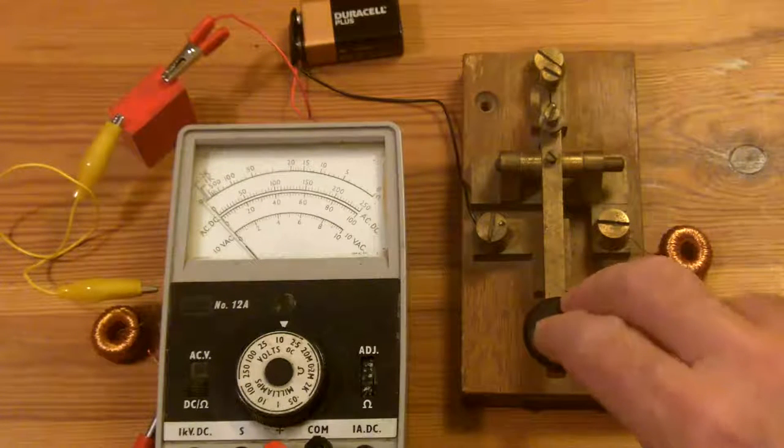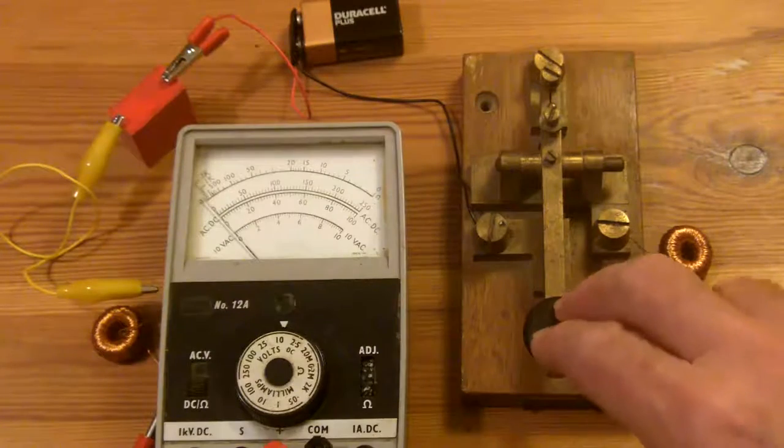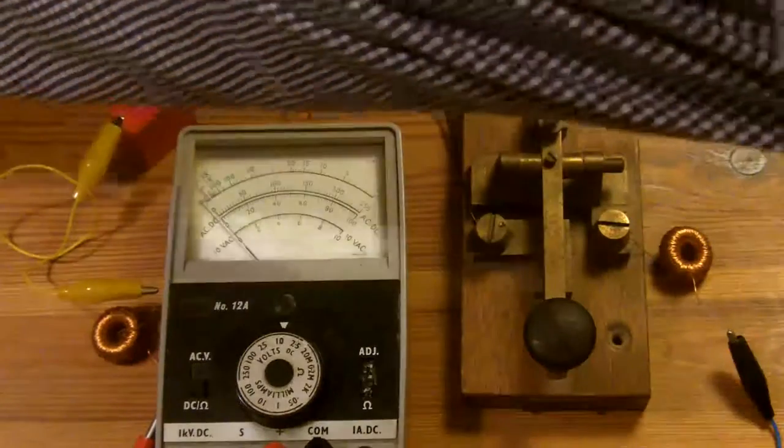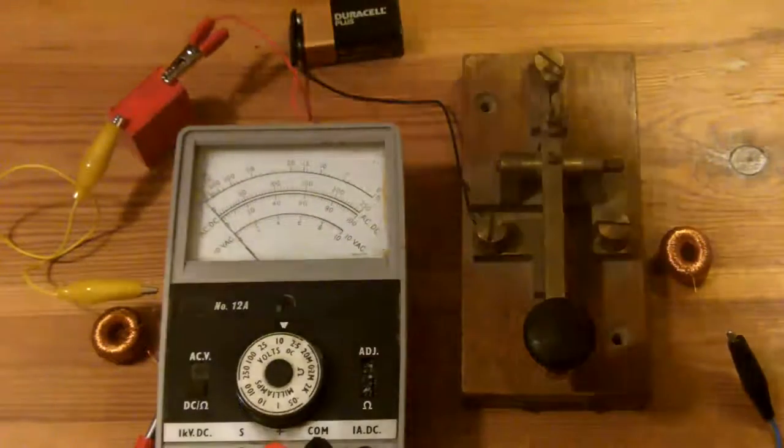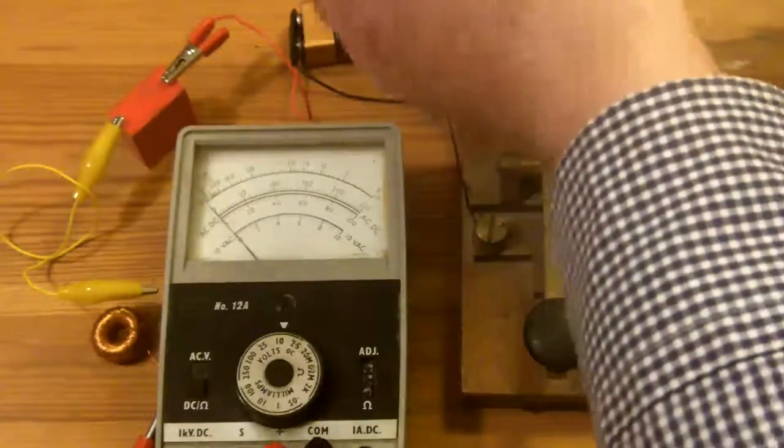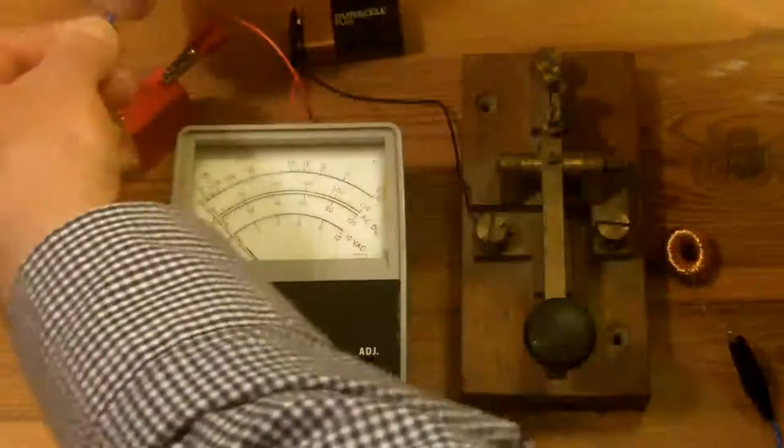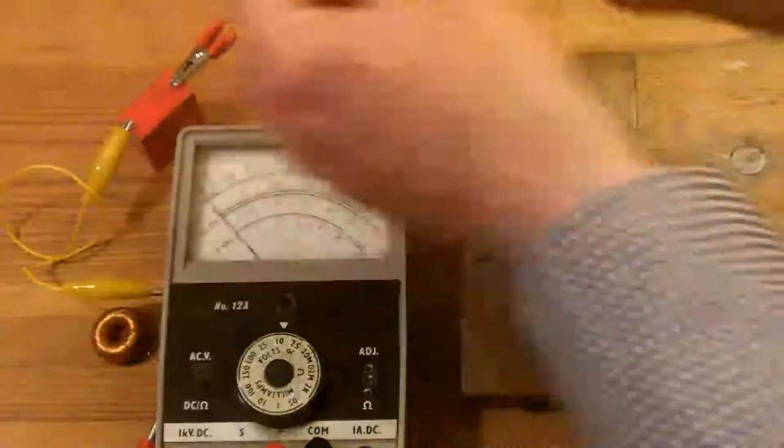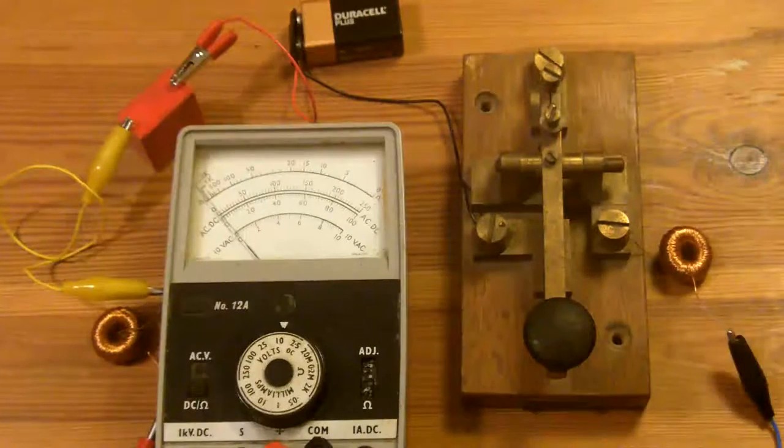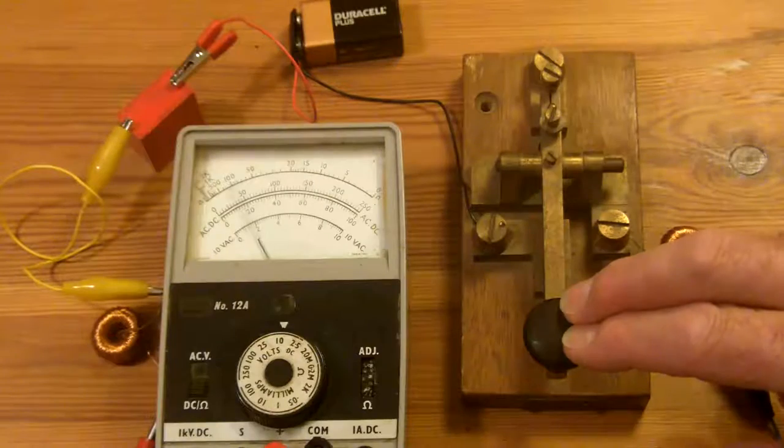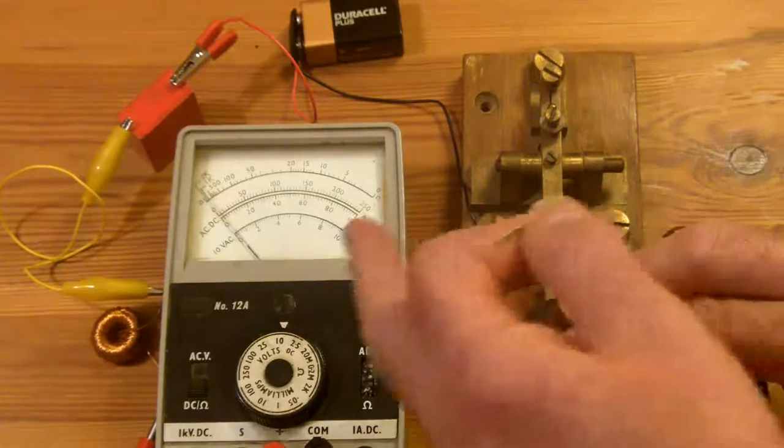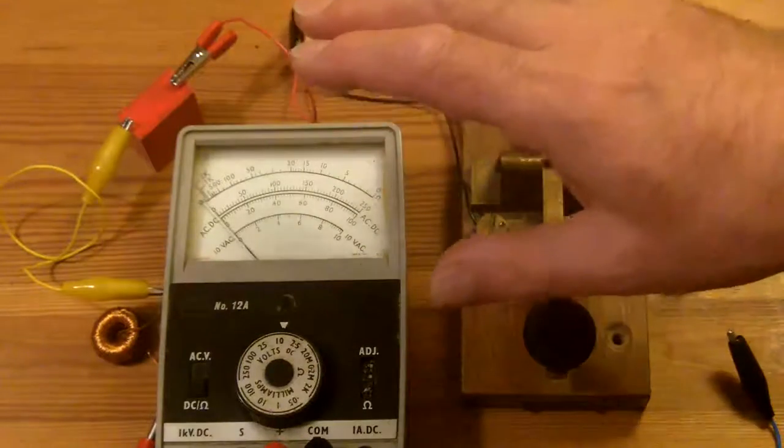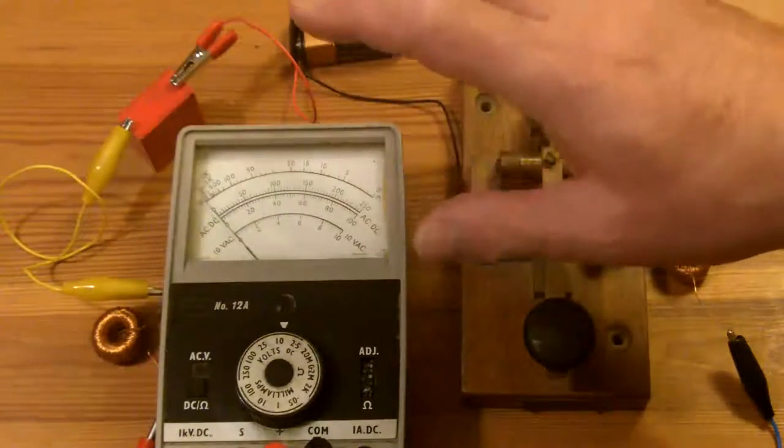Now, as I close the key, there's no further action. The meter's not moving. But if I discharge that capacitor, let's find a bit of wire for a short circuit. Okay, I'll just discharge that. There. And again, when I press the key, the capacitor charges. And you'll see it's got nothing to do with the inductors. I'll come on to inductors another day, maybe.